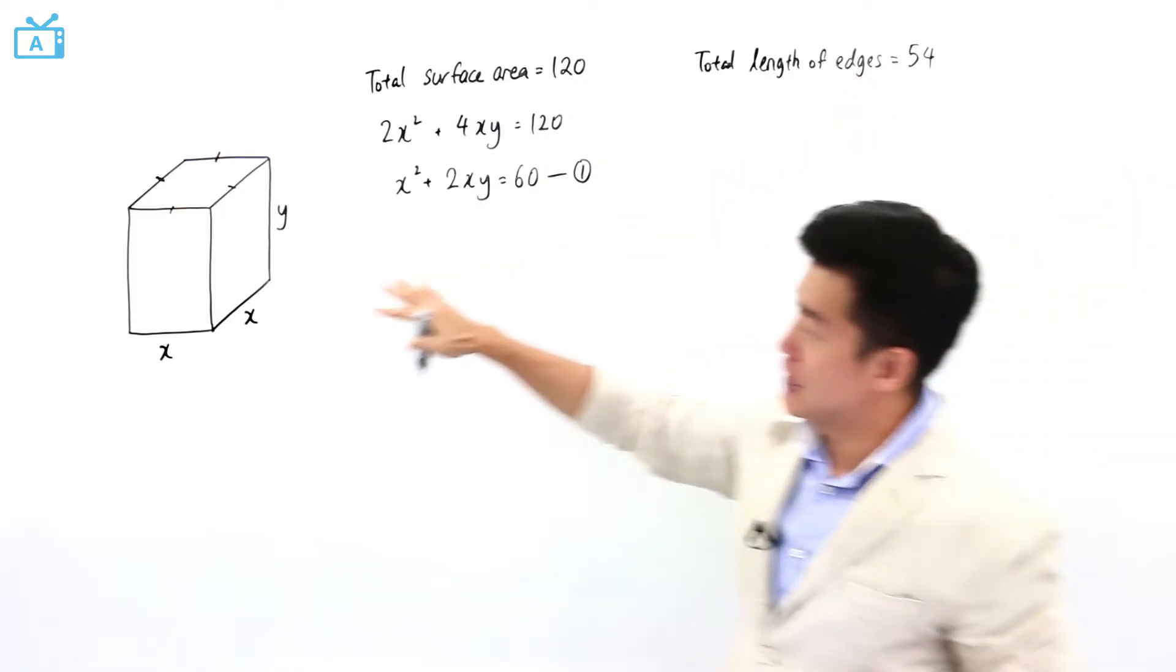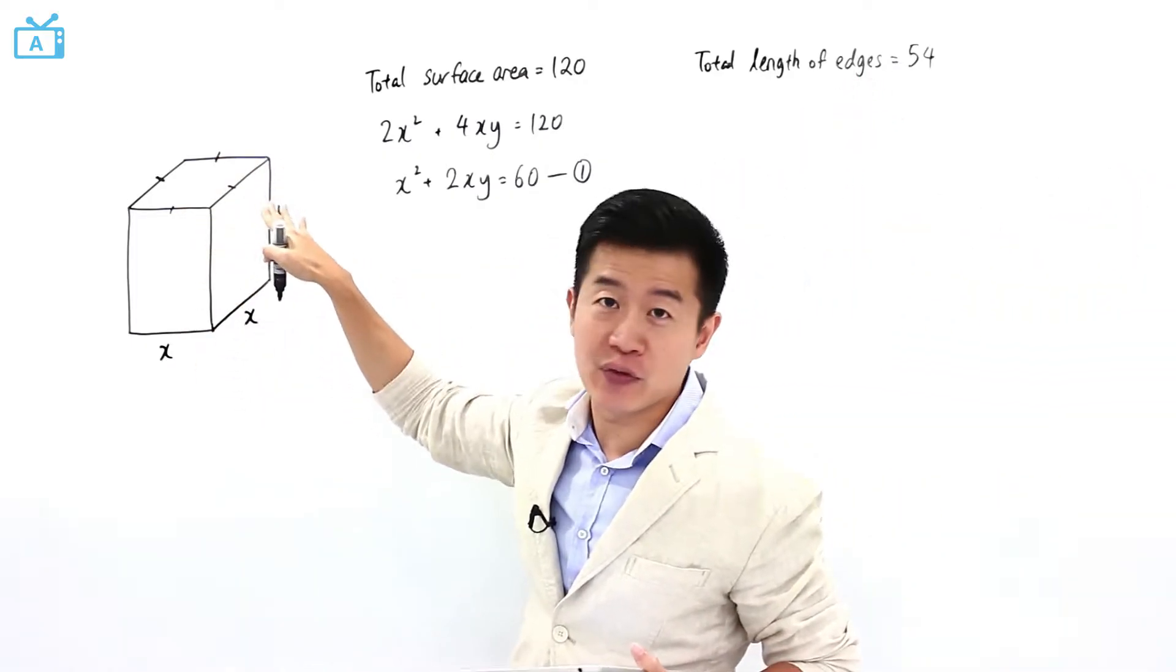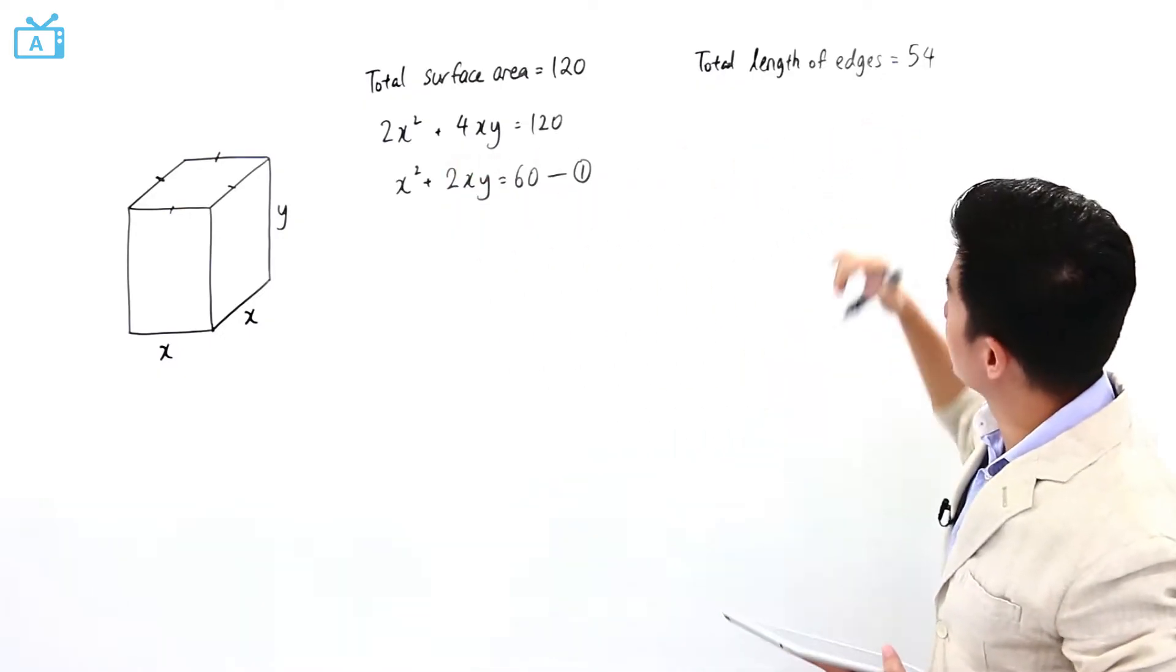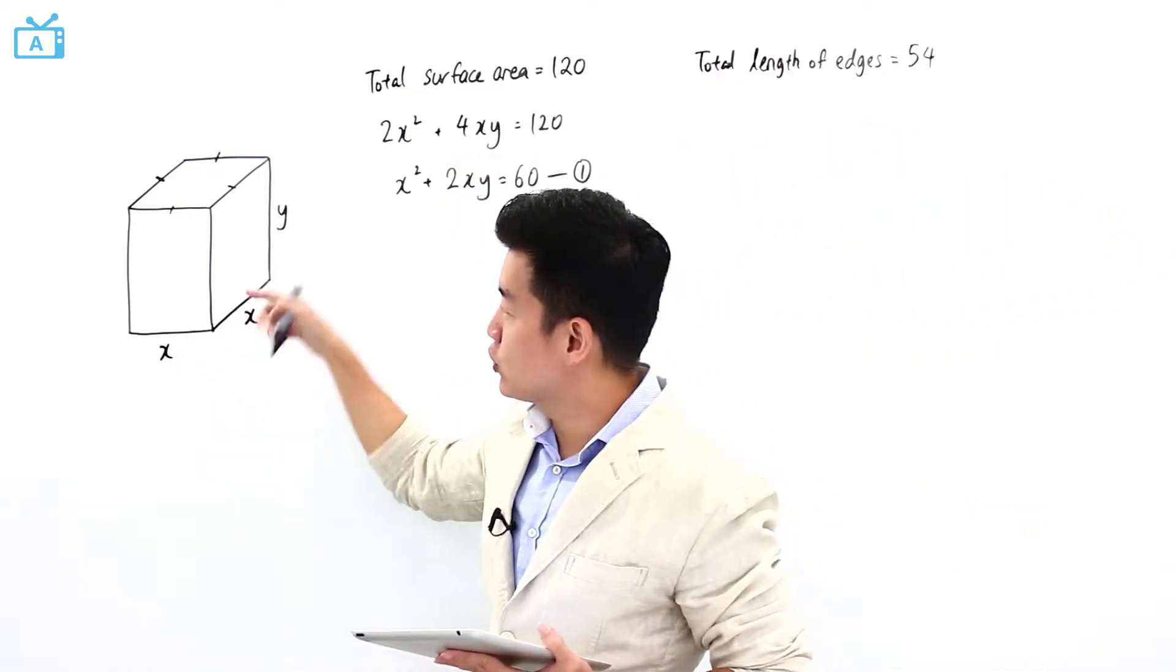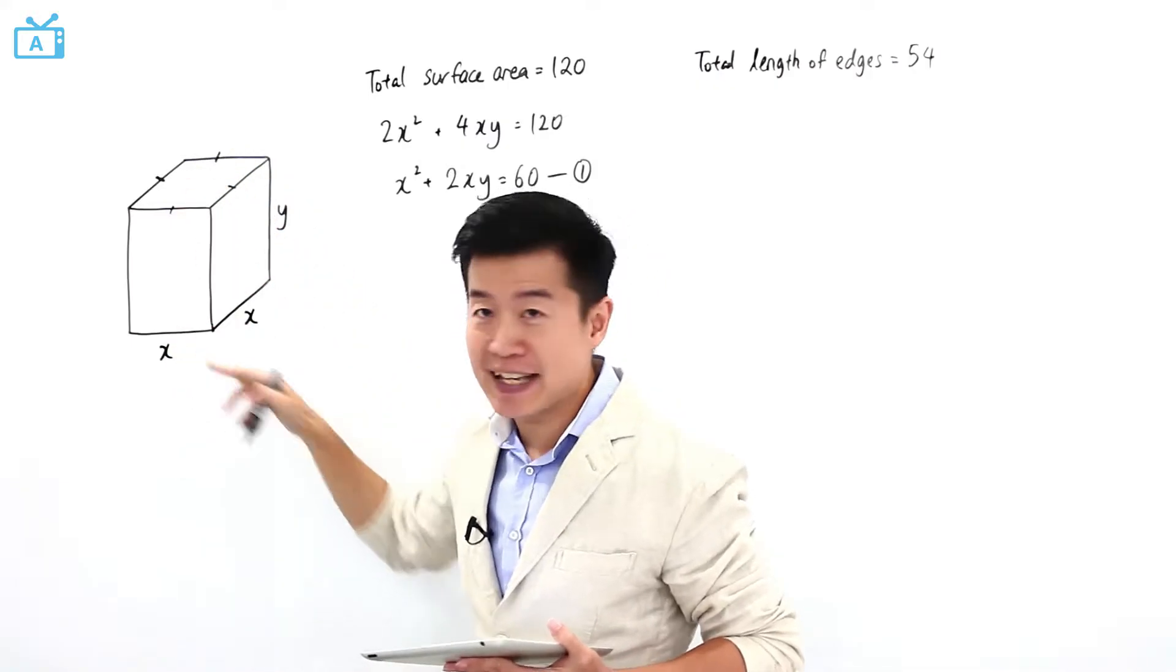And then it is also given to me that if I were to add up all the edges, the length of the edges, it is going to be equal to 54. There's 1, 2, 3, 4, 5, 6, 7, 8 of this x. So it is going to be 8x.